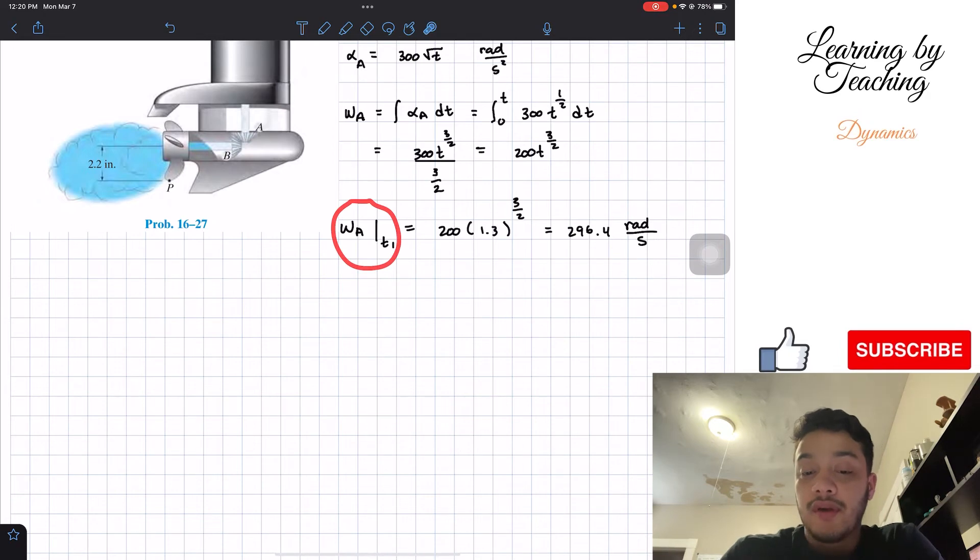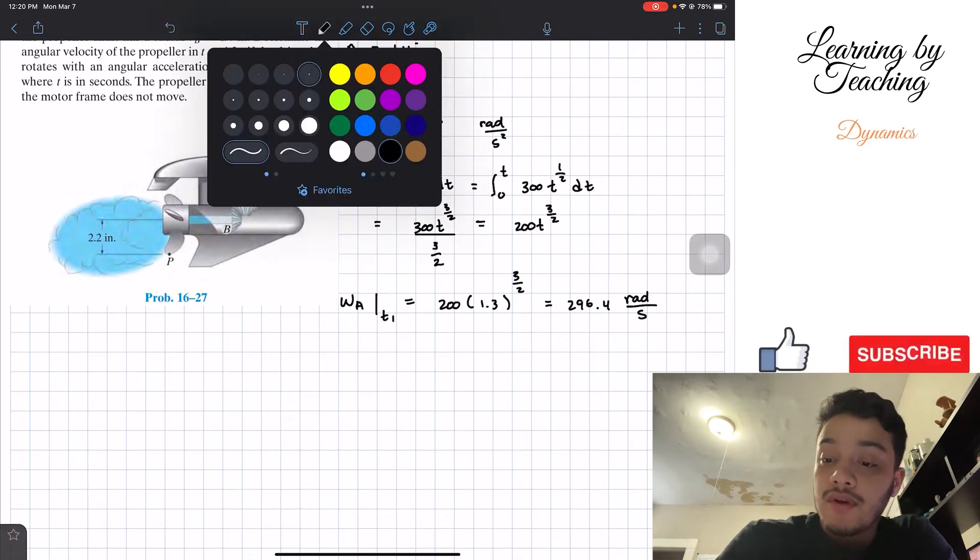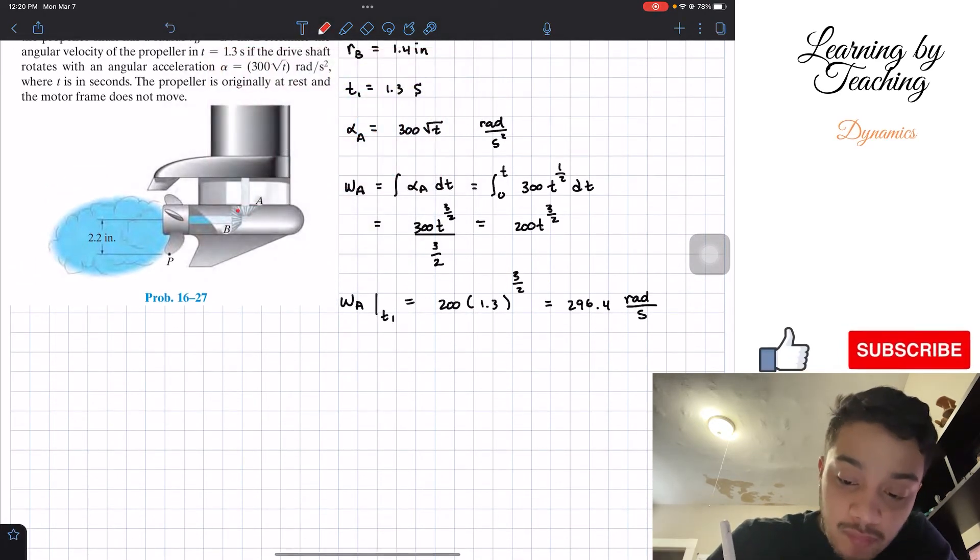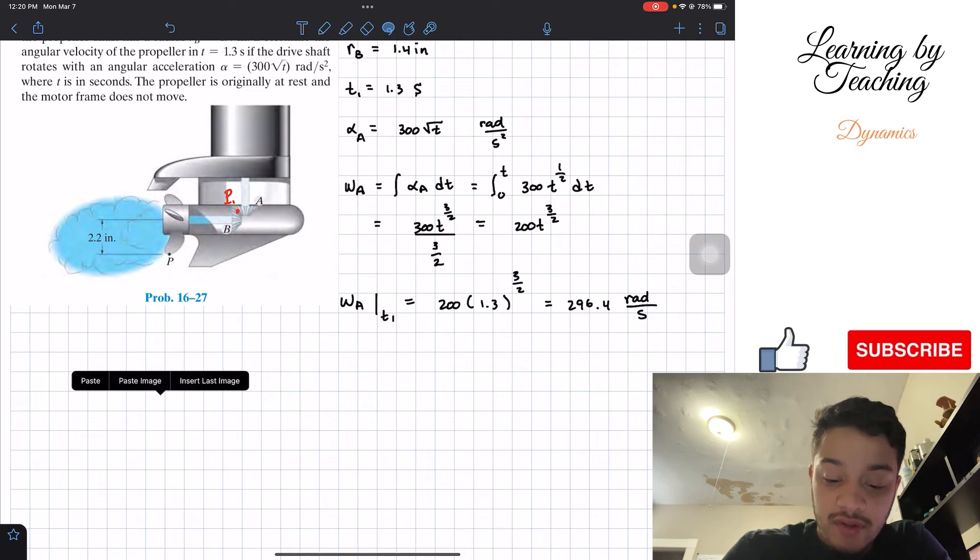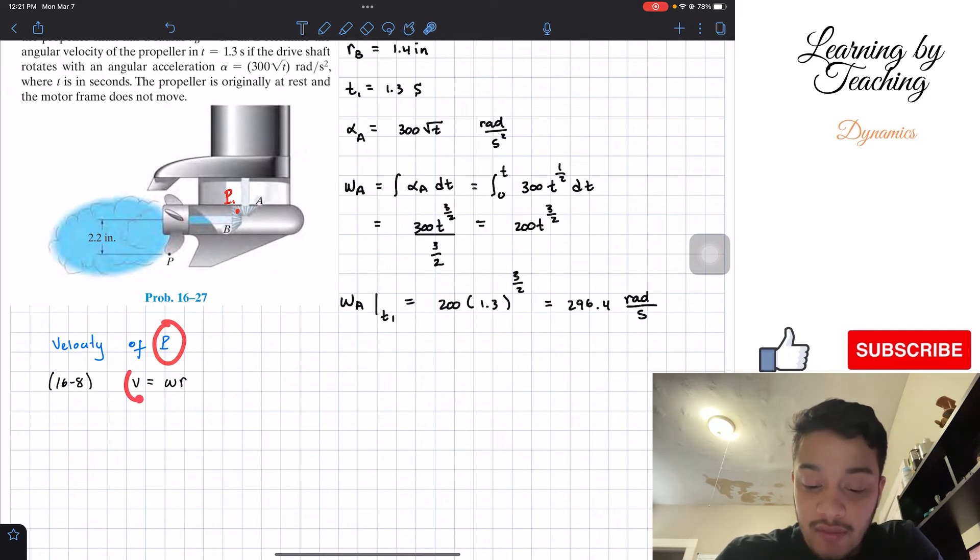And why is this important? We're going to look at a point here that connects both gears, gear A and gear B, and we're going to call it point 1. What happens with this point 1 is that the velocity of this point uses the equation where the velocity of a point is equal to the angular velocity times its radius.